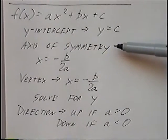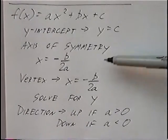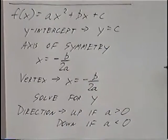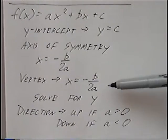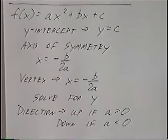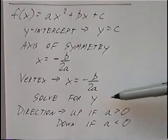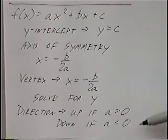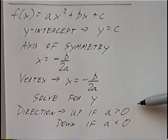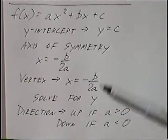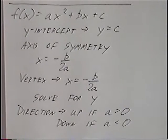The axis of symmetry for a parabola is x = -b / 2a. The vertex of a parabola also has x = -b / 2a, and then we solve the y-value for the vertex. The direction of a parabola is up if a is greater than zero, or down if a is less than zero.